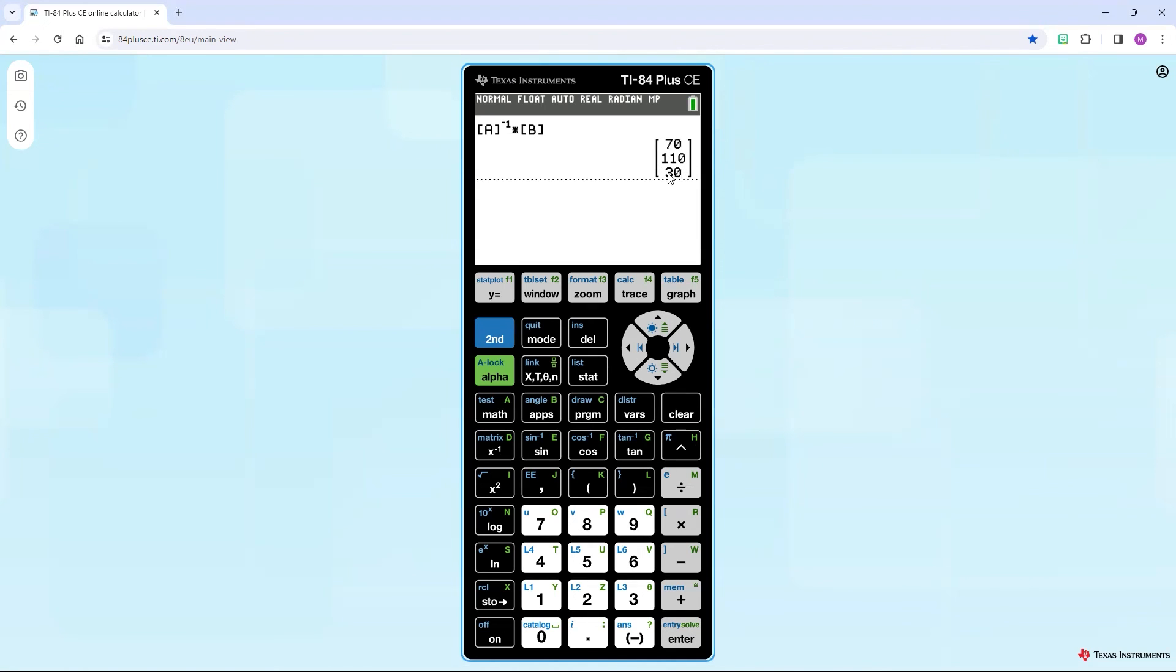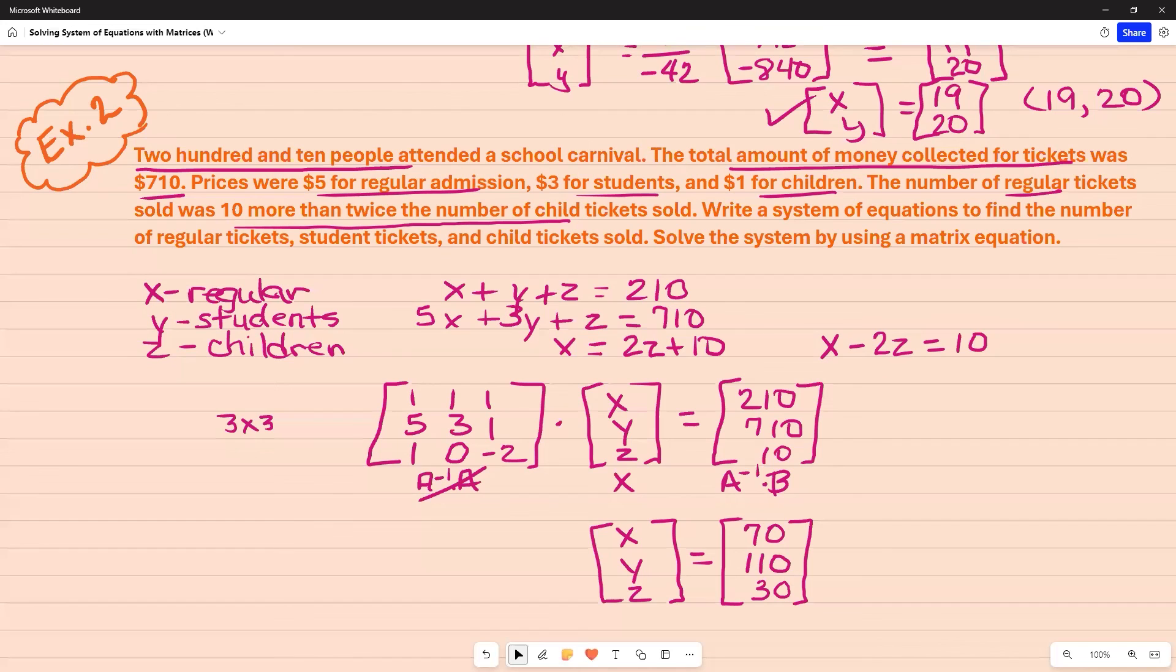X is 70, Y is 110, and Z is 30. So if you want to go back and test to make sure it's true, you would take 70, which represents your X value, place it here. You would take Y, 110, place it here. Z, which is 30. And when you add all of those in this one, it should be 210.